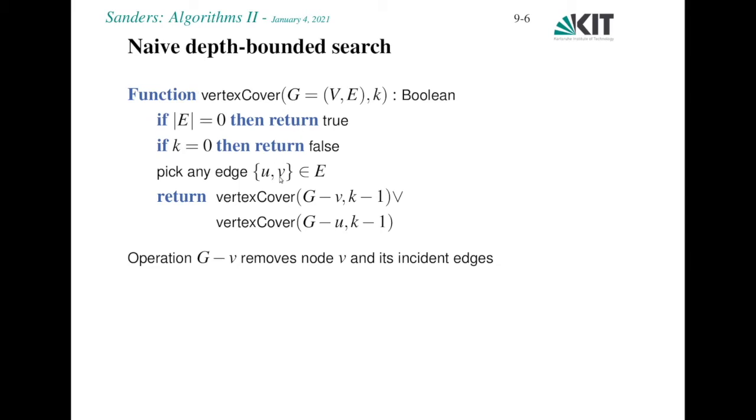It's a recursive function. Its input is a graph and a parameter k. It returns just whether the problem is solvable or not. Base cases are, if there are no edges left, we have a trivial problem, return true. If there is no budget left for vertices into the vertex cover, that's this parameter k equals 0, and there are still edges, then we cannot solve the problem and we return false.